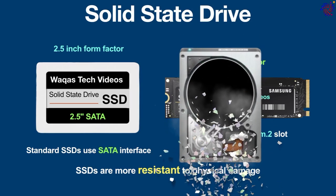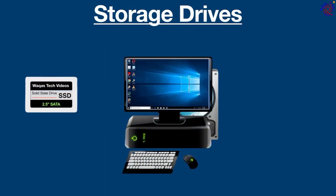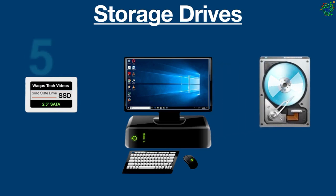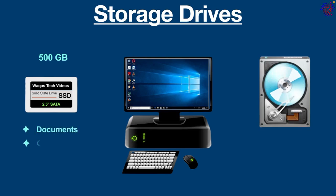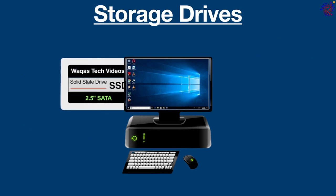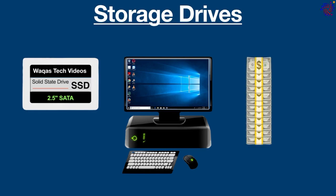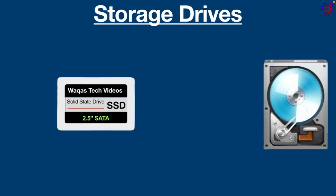Modern computers may come with both an SSD and a hard drive. The faster SSD, with lower capacity, can contain the most important data such as the operating system, documents, and software, while the slower hard drive, with higher capacity, stores less important data such as videos. You can also build a computer with one large SSD for all storage, but that increases cost. To save money, you can use both an SSD and a hard drive.